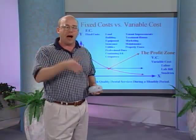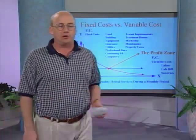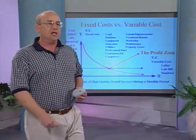If you do twice as many crowns, your lab bills and sundries double. You need the same labor because you do the same number of crowns with the same staff and same chairs.